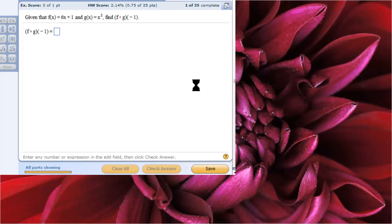Okay, this problem is a little bit different. It's a composition problem, but this time we're composing a number. F of x is 6x plus 1. G of x is x cubed, x to the third power. And we're going to find f of g of negative 1.